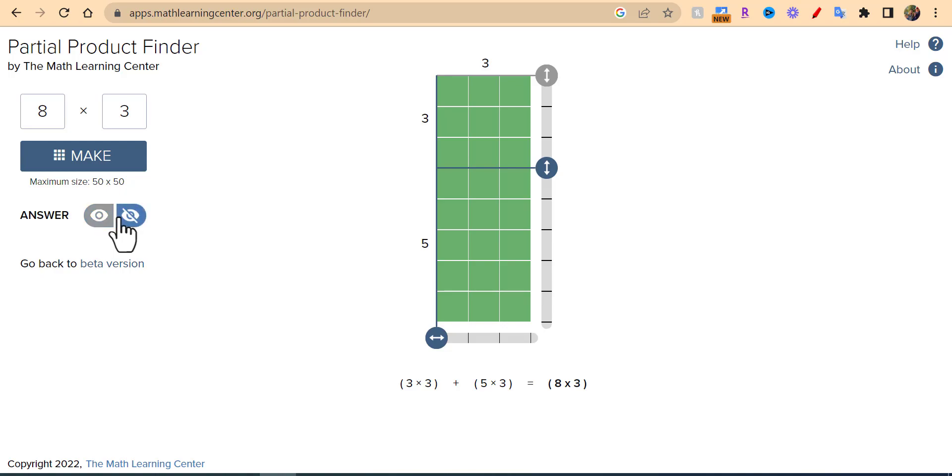And you could ask them, hey, what is 3 times 3? What is 5 times 3? Add those together. Really nice to have. And of course, just like before, you could do the same thing here and represent everything that way.